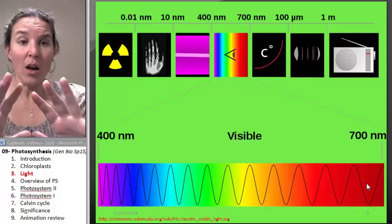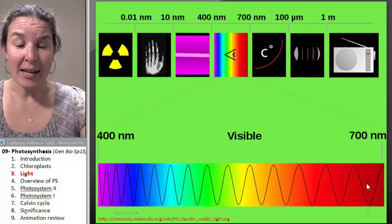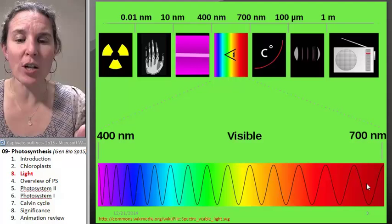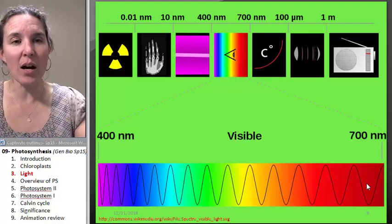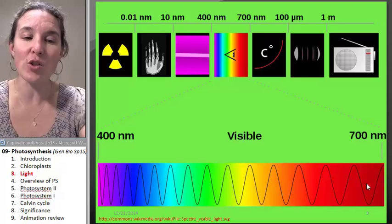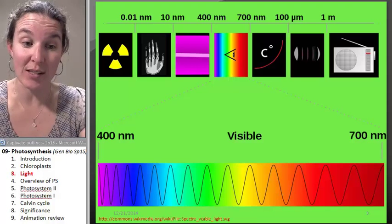All right. Now we're going to go look at what is the structure in the chloroplast that absorbs this light? And the structure is called a photosystem.